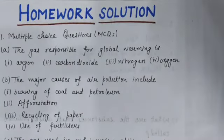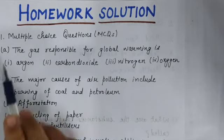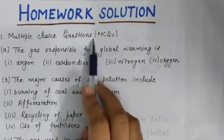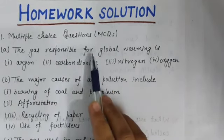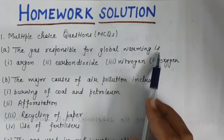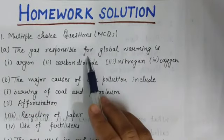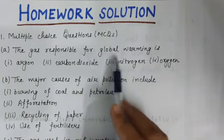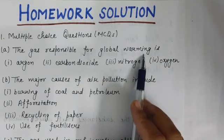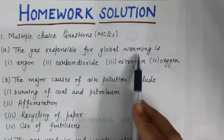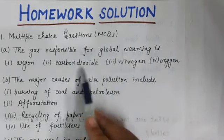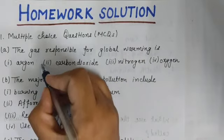Now we will discuss the homework solution of the previous lecture. Question number 1 was multiple choice. Part A: the gas responsible for global warming. Two gases are responsible for global warming — they are called greenhouse gases: first is carbon dioxide and second is methane. The answer is carbon dioxide — this option is correct.